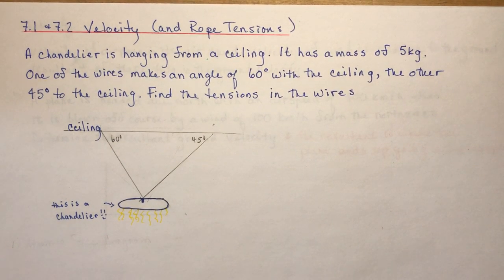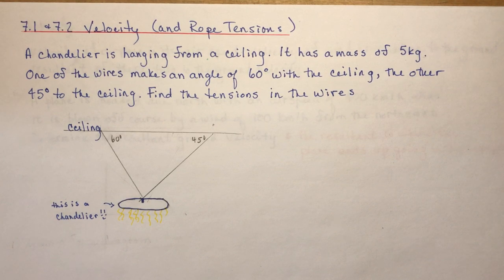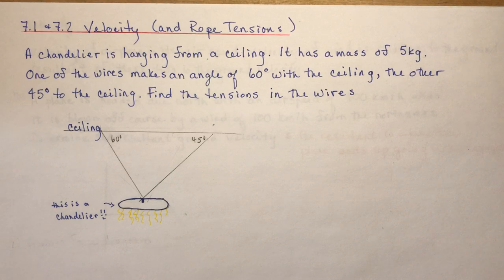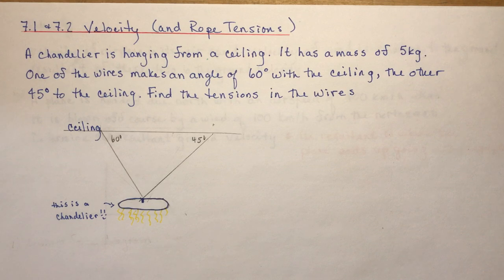I'm going to do a rope tension question from 7.1, and then do some velocity questions from 7.2. The first one: a chandelier is hanging from a ceiling with a mass of 5 kilograms. One of the wires makes an angle of 60 degrees with the ceiling, and the other makes 45 degrees with the ceiling. Find the tensions in the wires.